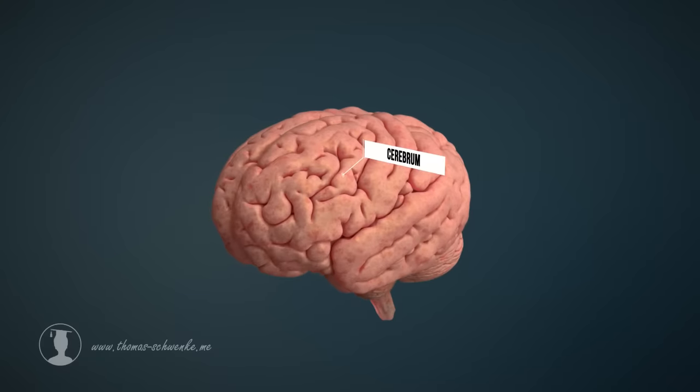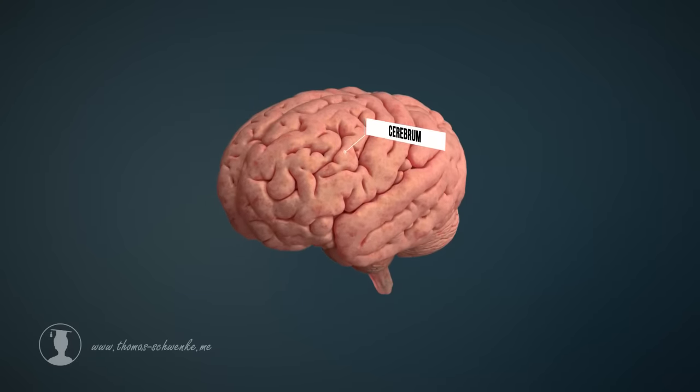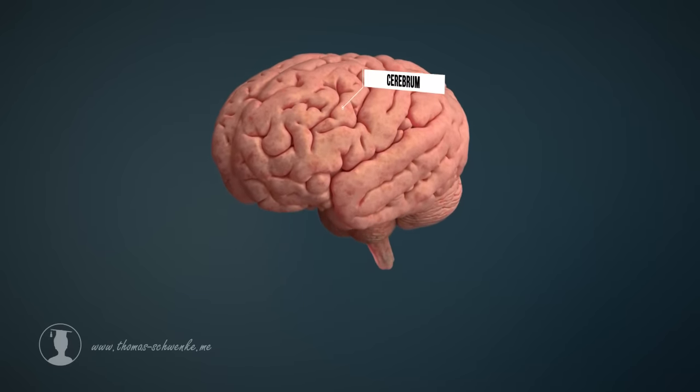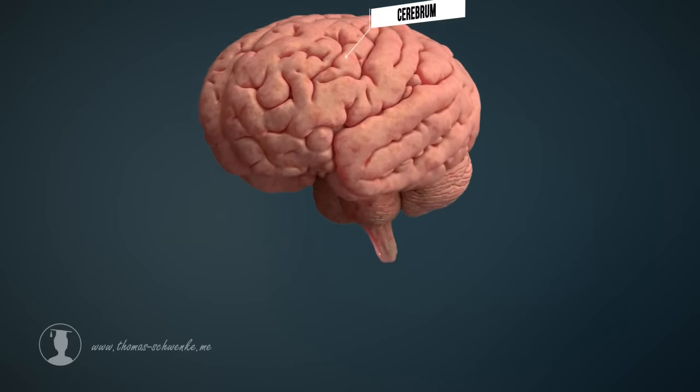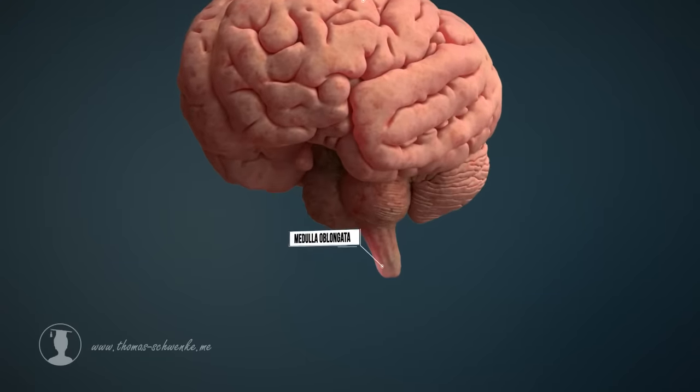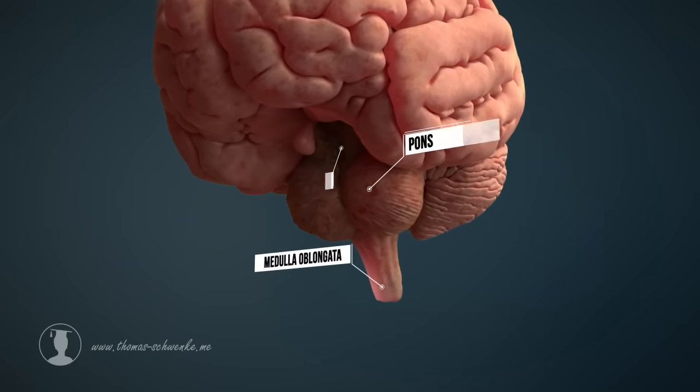Let's take a look at the general design of our brain. The brain is generally divided into different parts. The brain stem consists of three parts, the medulla oblongata, the pons, and the midbrain.